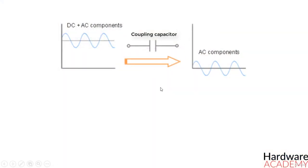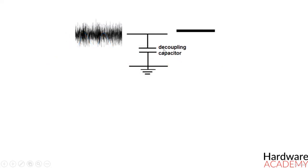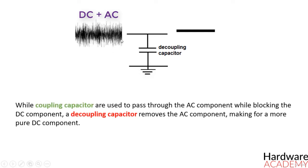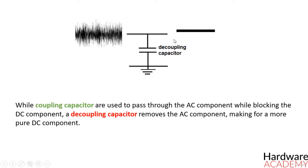While coupling capacitors are used to pass through the AC component while blocking the DC component, a decoupling capacitor removes the AC component, making for a more pure DC component. A decoupling capacitor, as shown here, is a capacitor which is used to decouple AC signals from a DC signal.